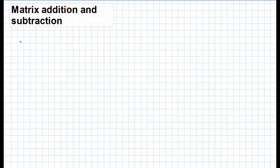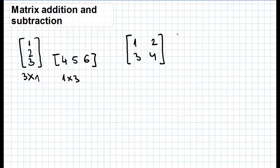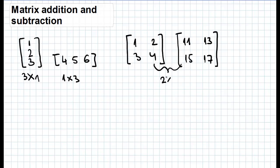Well, what does this mean? For example, let's say we have two matrices: first with elements 1, 2, 3 and second with elements 4, 5, 6. These two matrices cannot be added nor subtracted because they don't have the same size and shape. The first matrix has three rows and one column — its order is 3×1 — while the second matrix has one row and three columns — its order is 1×3. On the other hand, these two matrices, first with elements 1, 2, 3, 4 and second with elements 11, 13, 15, and 17, can be added and subtracted because they have the same size and shape. Both have order 2×2.